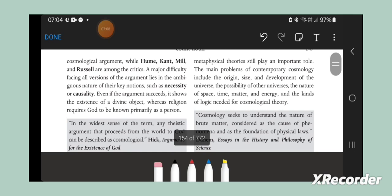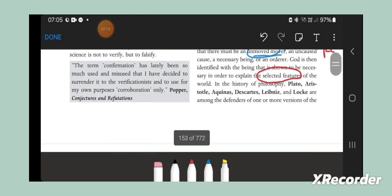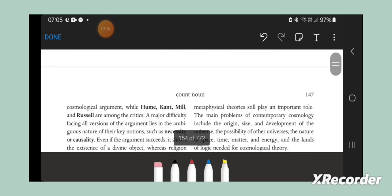These people are Plato and Aristotle, while Hume, Kant, Mill, and Russell are among the critics. So these people are the defenders of cosmological arguments, while Kant, Hume, Mill, and Russell are—Russell had a